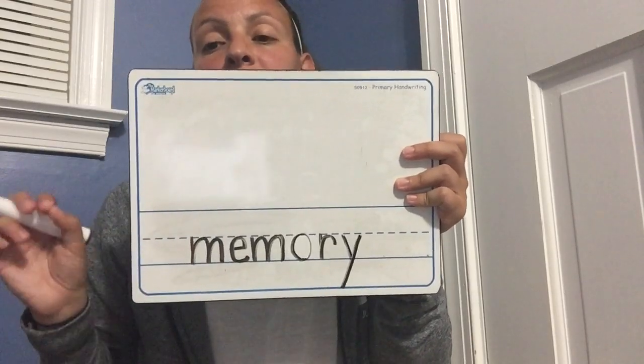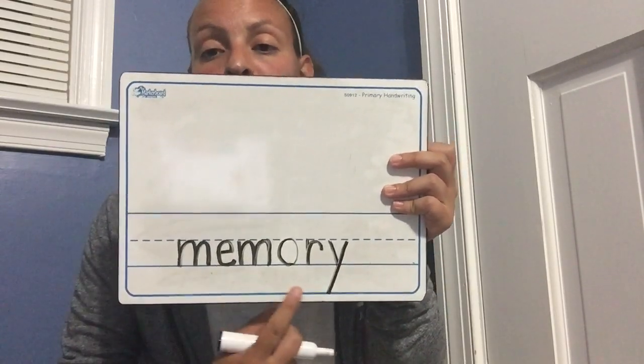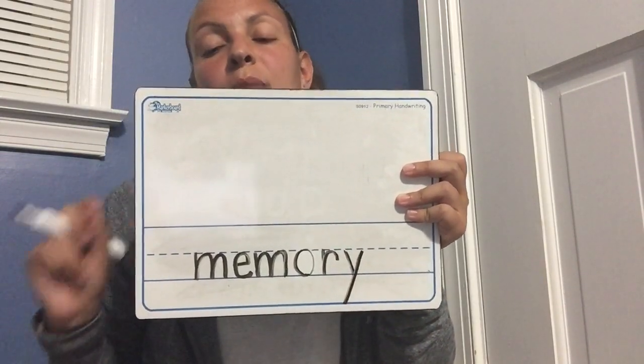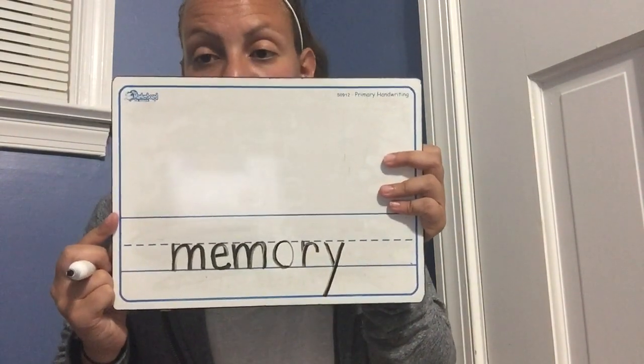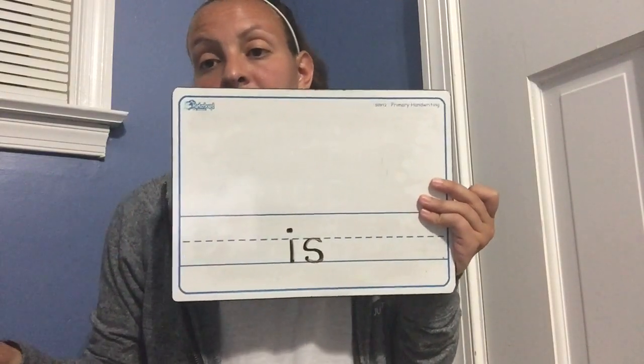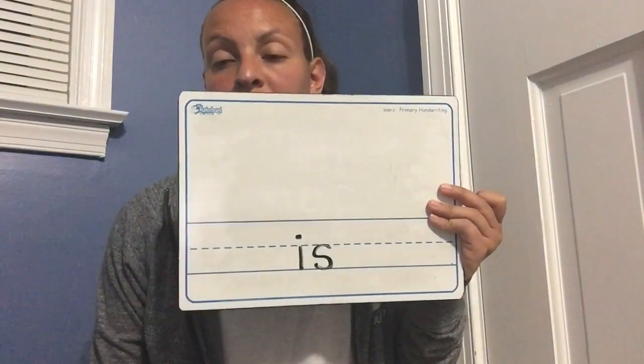So you have 'my favorite kindergarten memory.' You need one more finger space before the next word. My favorite kindergarten memory — the next word is going to be 'is.' Think about how you spell that before I show you. We're going to put a finger space and then write the word 'is': I, S. You probably already knew how to spell that. Any words that you need to catch up on, you can pause the video while you're writing.